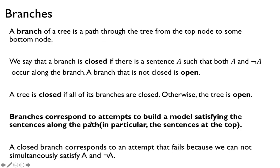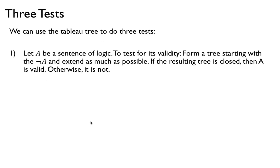We're going to use the tree to do one of three tests. The first test is to check whether a sentence is a tautology or valid. To test for validity, we form a tree starting with not-a — we assume a is false. Then we extend the tree as much as possible, applying all the rules. If the resulting tree is closed, then a is valid, because our attempt to show a is false led to contradiction in every path. Otherwise, it is not valid.